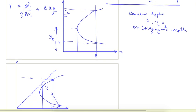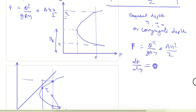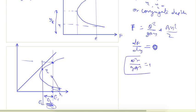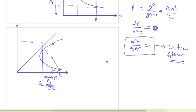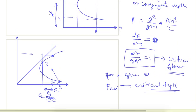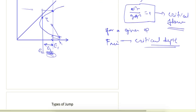Differentiating the specific force equation F = Q²/(gA) + Aȳ and setting dF/dy = 0 for minimum specific force, we obtain the condition Q²T/(gA³) = 1, which defines critical flow. Therefore, for a given discharge Q, the specific force is minimum at the critical depth.